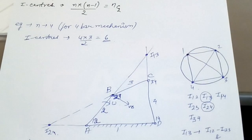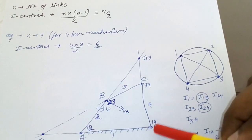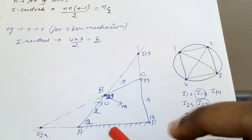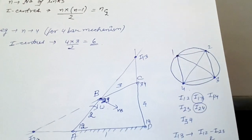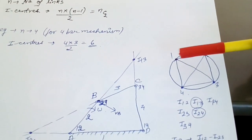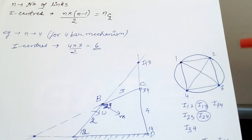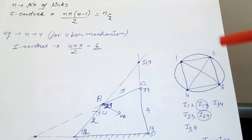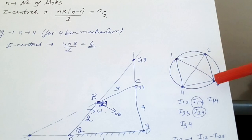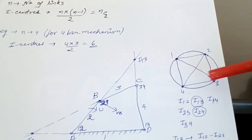First, make the configuration diagram ABCD as per the given dimensions, and label the links 1, 2, 3, and 4. Since there are 6 I-centers for a 4-bar mechanism, draw a circle and inscribe a square inside it, then join the diagonals. For a 5-bar mechanism you would use a pentagon, for 6 links a hexagon, and so on.